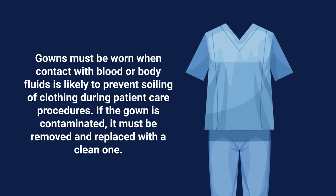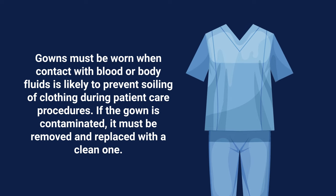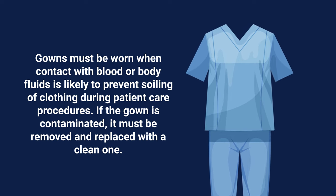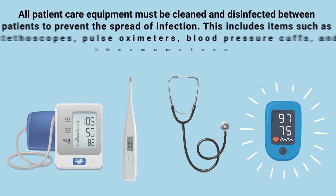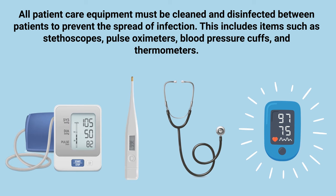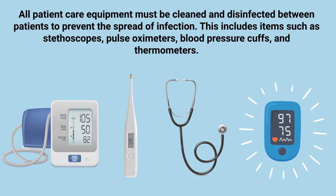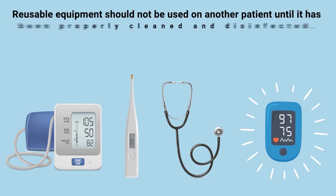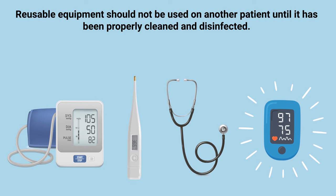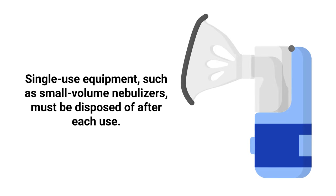Gowns must be worn when contact with blood or body fluids is likely, in order to prevent soiling of clothing during patient care procedures. If the gown becomes contaminated, it must be removed and replaced with a clean one. All patient care equipment must be cleaned and disinfected between patients to prevent the spread of infection. This includes items such as stethoscopes, pulse oximeters, blood pressure cuffs, and thermometers. Reusable equipment should not be used on another patient until properly cleaned and disinfected, and single-use equipment such as small volume nebulizers must be disposed of after each use.